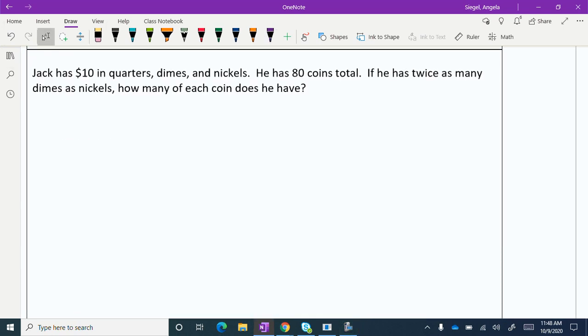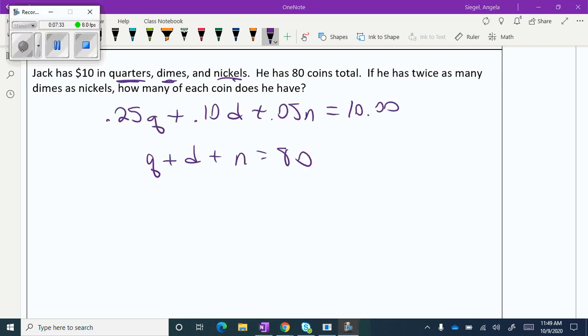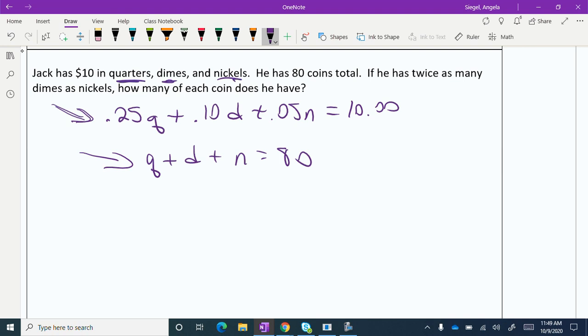We're going to do one more of the word problem. Think about our three variables here: number of quarters, number of dimes, number of nickels. And I want you to see if you can come up with the two equations that they're looking for. These are the two equations. Notice this is a value equation. You need to look at it from two different perspectives. This is from the perspective of value. And this is just a sheer number of coins perspective. A lot of people on this one will go ahead and just move the decimal place over, because they don't like the decimals. So you'd have 25Q plus 10D plus 5N equals 1,000. That's totally up to you. It doesn't matter.